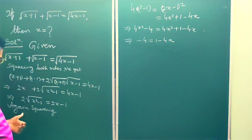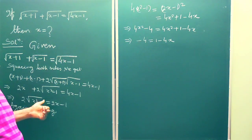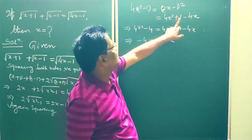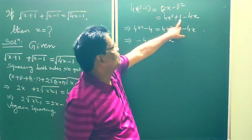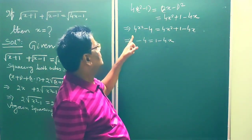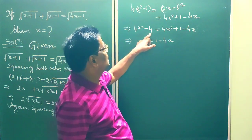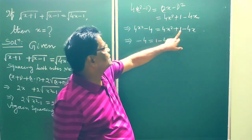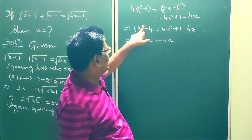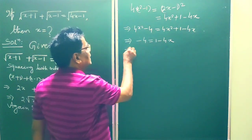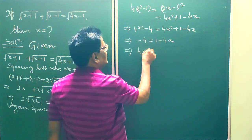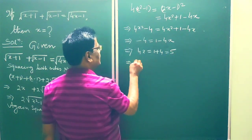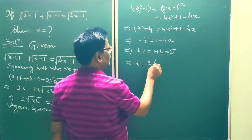So again squaring, we get 4x squared minus 1 equal to (2x minus 1) squared, which is 4x squared plus 1 minus 4x. The 4x squared cancels, giving 4x equals 1 plus 4, which equals 5. So this implies x is equal to 5 over 4.